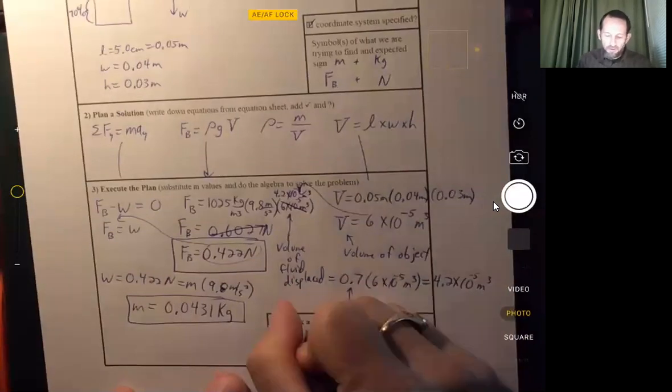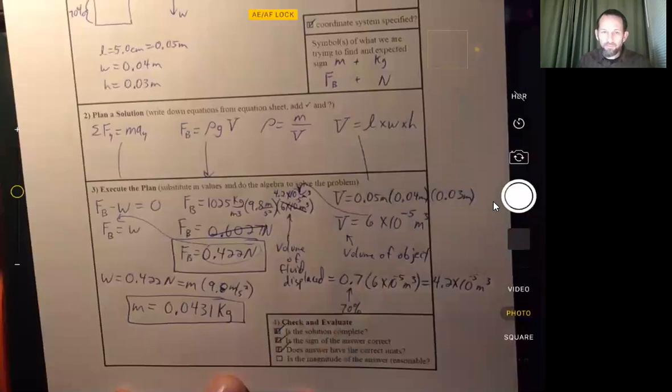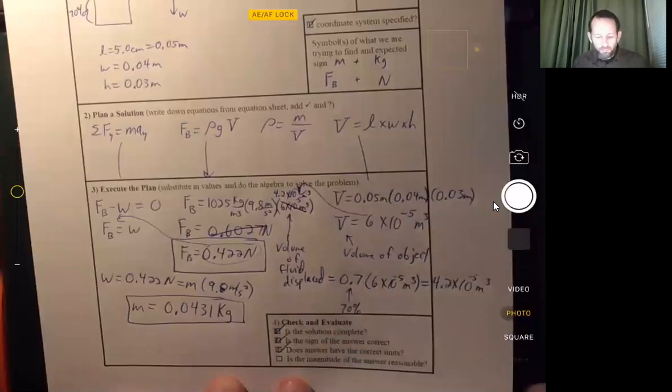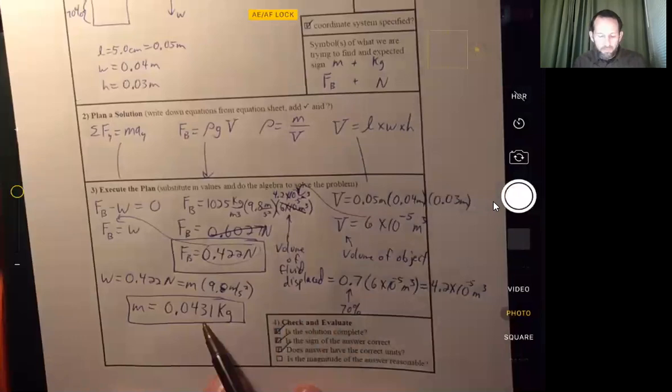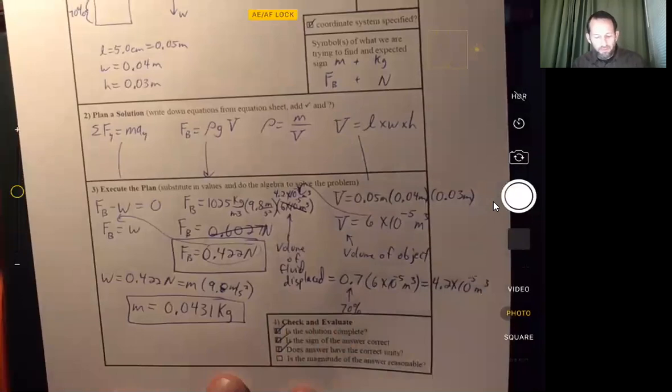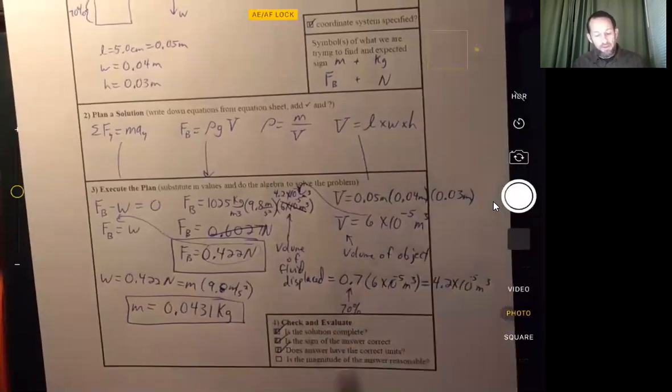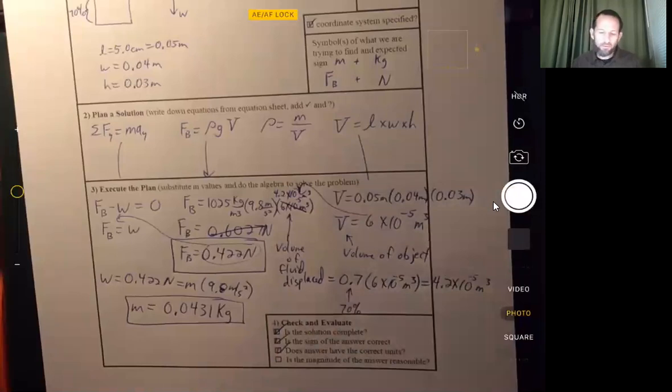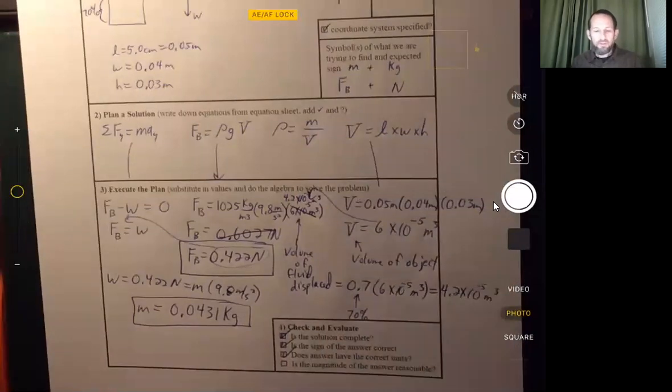We got positive values for both. The units worked out to what we expected. Were the answers reasonable? Well, 43 grams, that's well, you can see this is well less than a kilogram. A kilogram is about equivalent to a weight of 2.2 pounds, and so this is less than 2.2 pounds. So I think that does make sense that this tiny piece of life preserver has a small mass and a small weight.